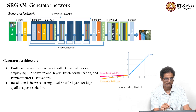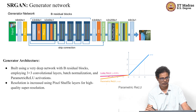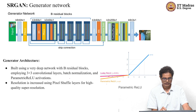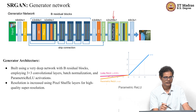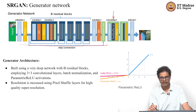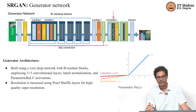The residual block has parametric ReLU, then another convolution and batch norm, followed by element-wise summation. This is repeated many times, with all layers being 3×3 convolutions with batch norm and parametric ReLU. All this processing is done in the low resolution space. Then upsampling is performed using pixel shuffle, because ultimately we need to produce a higher resolution output.